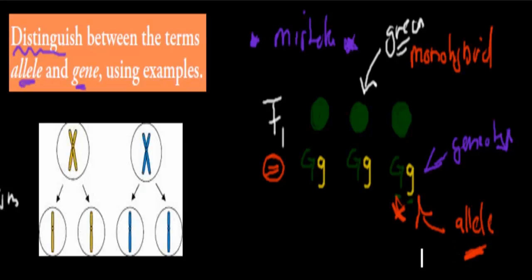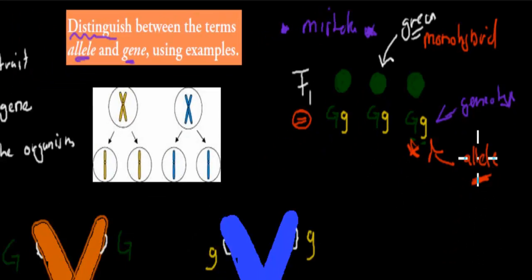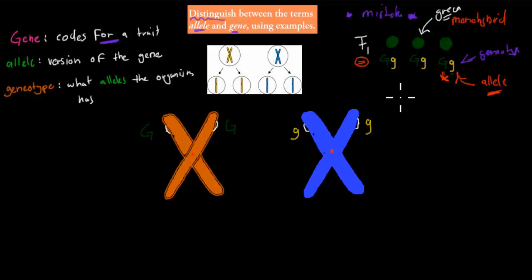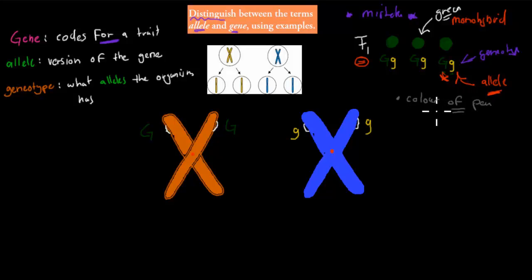It's an important difference because the actual gene is just something that codes for a trait. So a gene codes for a trait — for example, there's a gene that's responsible for the colour of the peas.